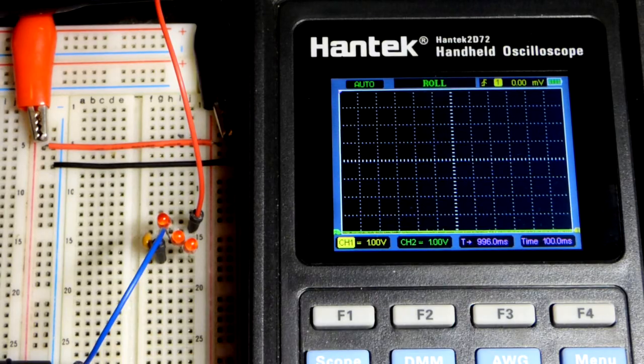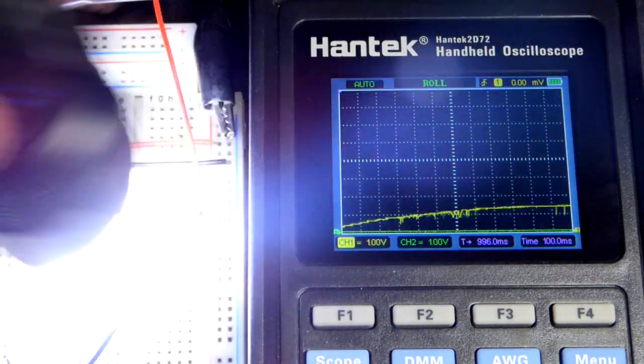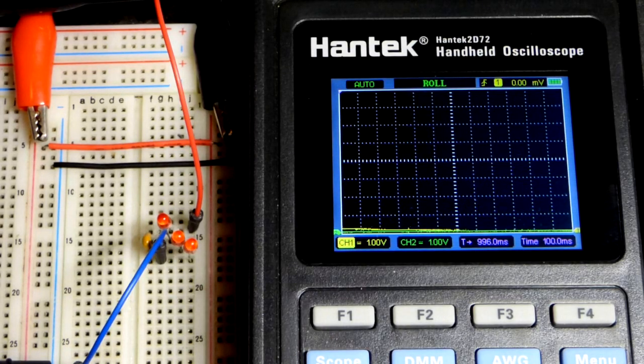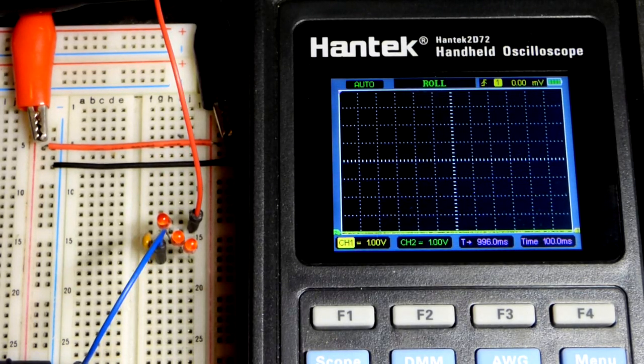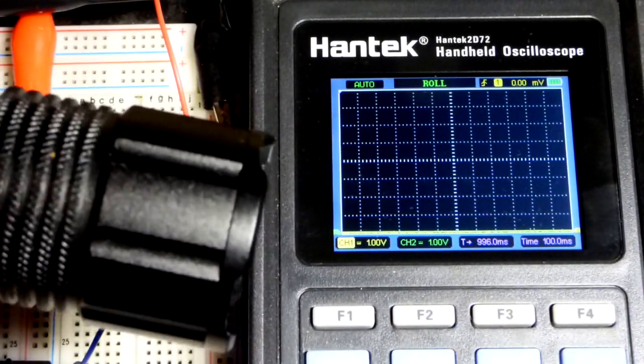And the capacitor was to help kind of store the charge for a little bit. You can see it doesn't drop down to nothing right away, but this particular flashlight, the light flashes on and off rapidly to control its brightness.